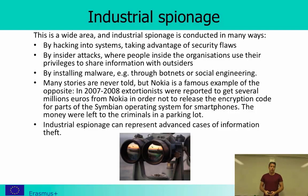Industrial espionage is often done by hacking into systems and taking advantage of security flaws, or it can be an insider who has the right to access information and shares it with outsiders. It can also be done by installing malware through botnets or social engineering, where the malware is the software doing the spying.